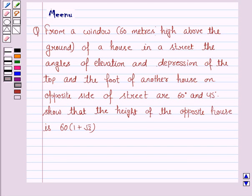Hello and welcome to the session. Let's work out the following problem. From a window 60 meters high above the ground of a house in a street, the angles of elevation and depression of the top and the foot of another house on the opposite side of the street are 60° and 45°. Show that the height of the opposite house is 60(1 + √3).